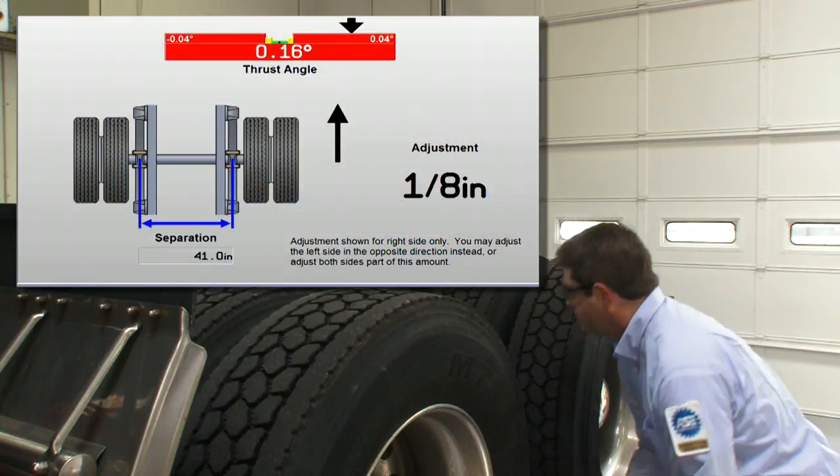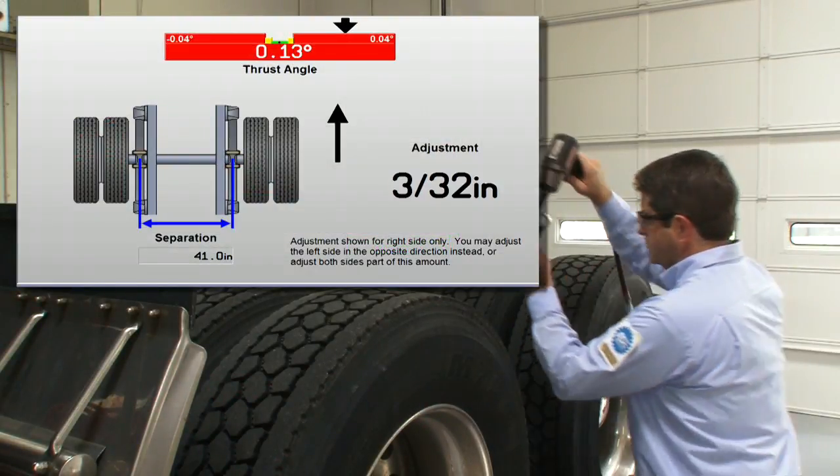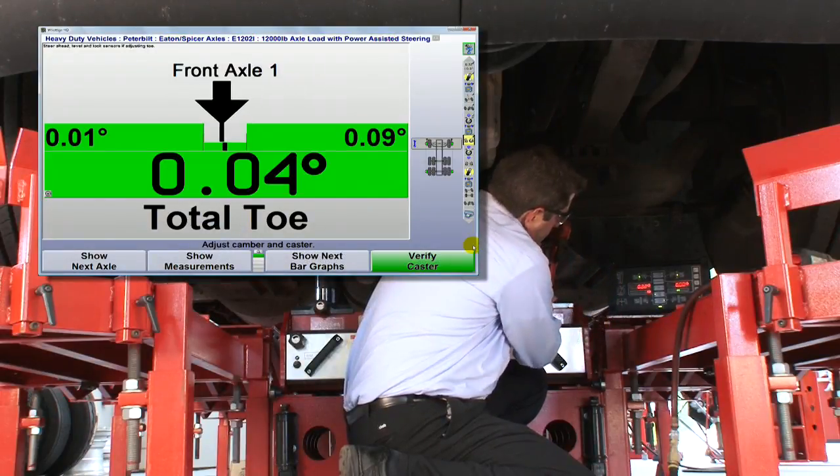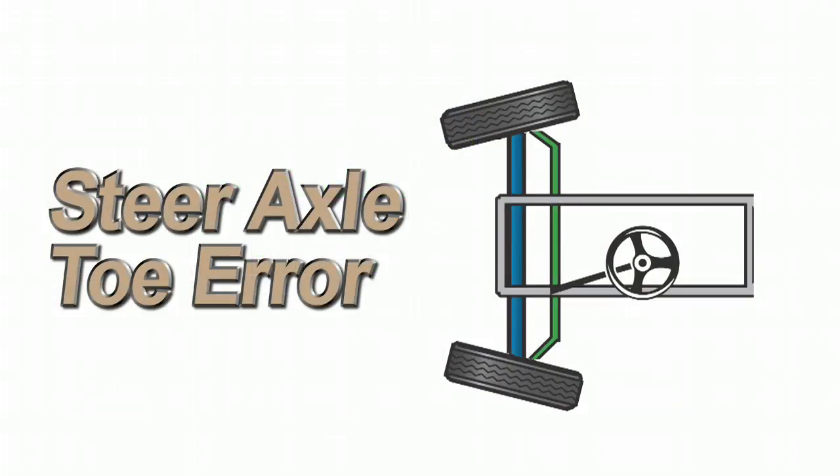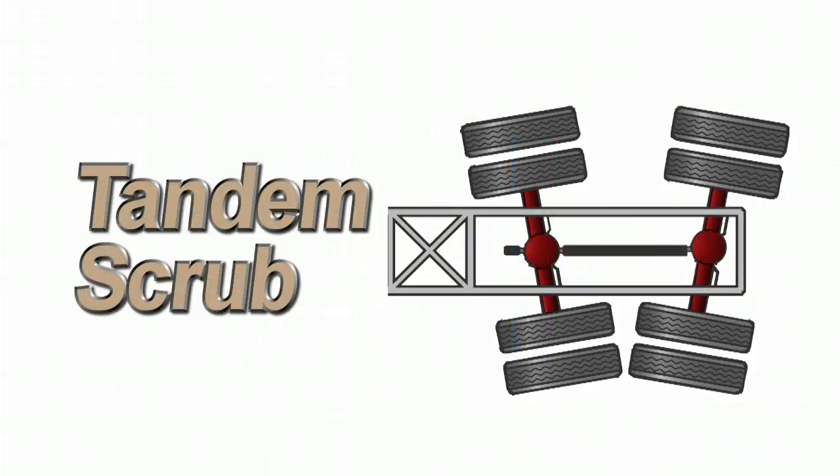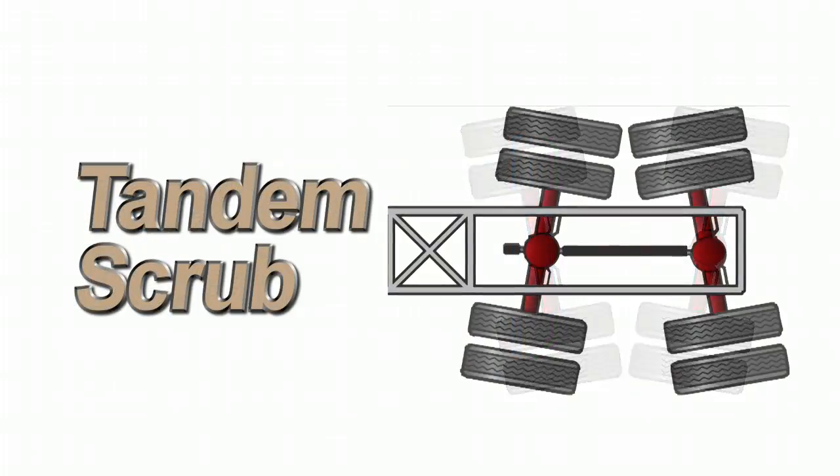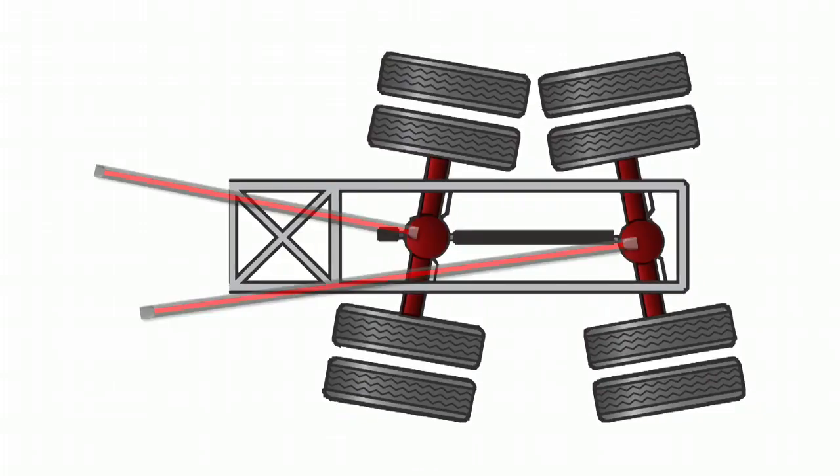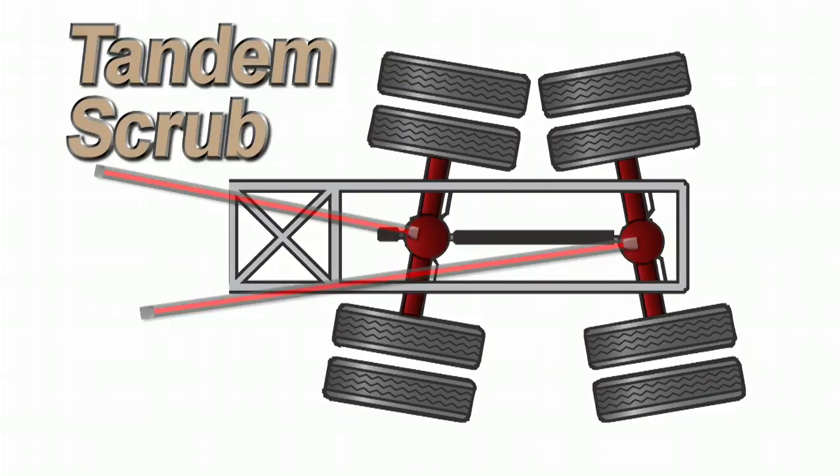Heavy-duty multi-axle alignment is all about correcting tandem scrub at the rear and toe on the steering axle. These are the most common misalignment conditions you see on heavy-duty vehicles. The drive axles are pointed in separate directions, creating tandem scrub.